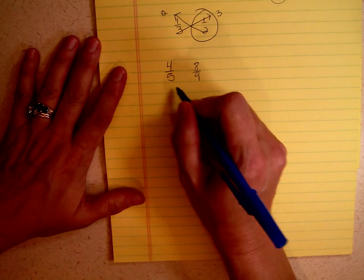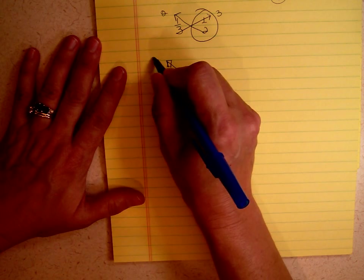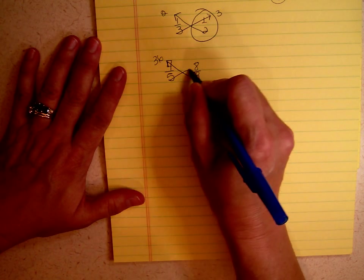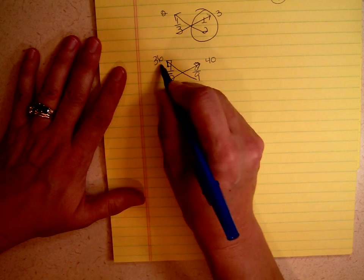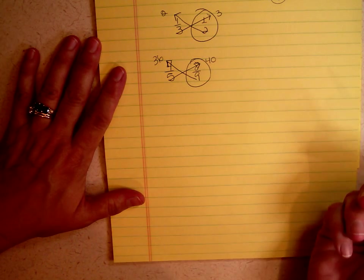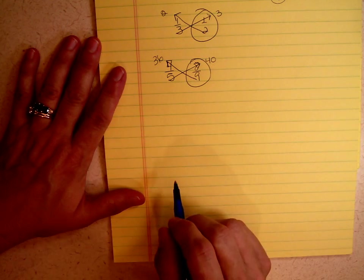Let's do it an easier way. 9 times 4 is 36. 5 times 8 is 40. 40 is bigger than 36, so 8 ninths is bigger than 4 fifths.